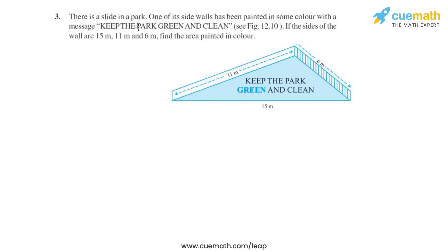Question number 3 says that there is a slide in a park. One of its side walls has been painted in some color with the message keep the park green and clean. The sides of the wall are 15 meter, 11 meter and 6 meter. We have to find the area which is painted in color.